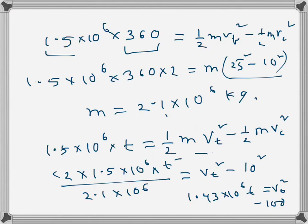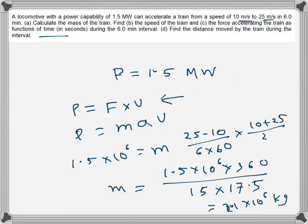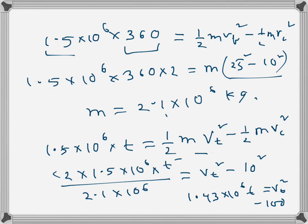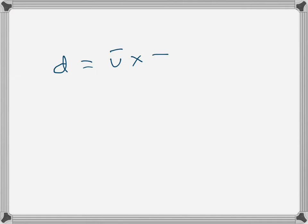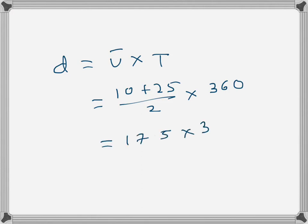Finally, to find the distance traveled by the train over the 6-minute interval, we use the average velocity multiplied by time. The average velocity is (10 + 25) / 2 = 17.5 meters per second, and the total time is 360 seconds. So the distance is 17.5 × 360 = 6300 meters.